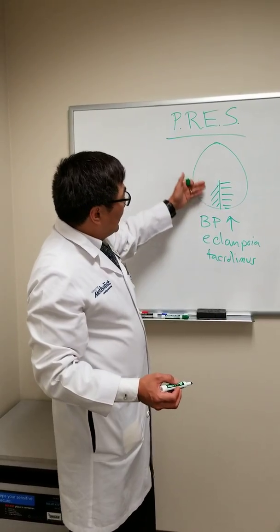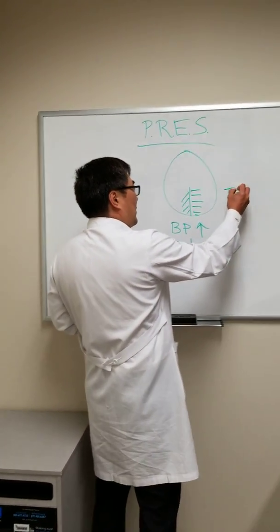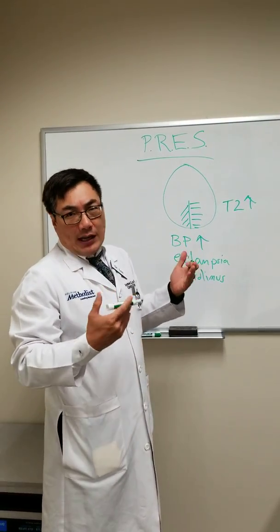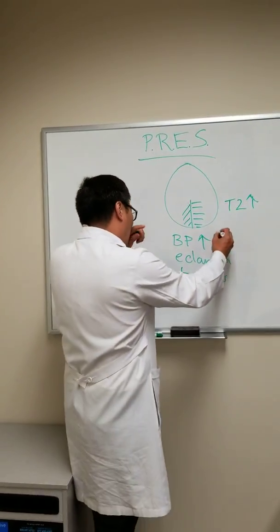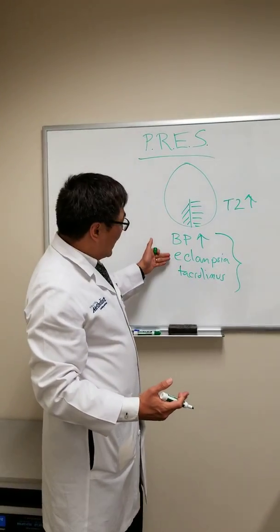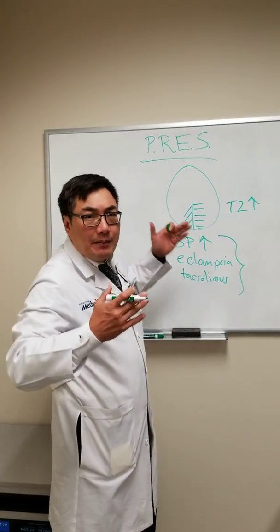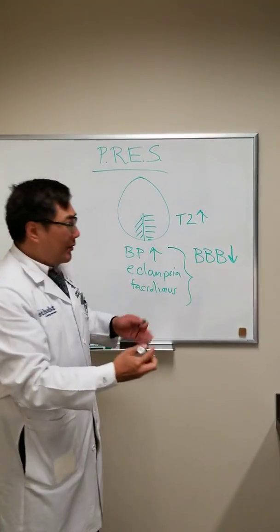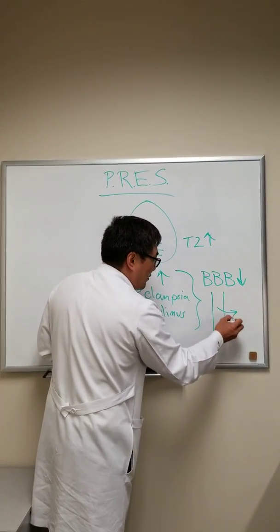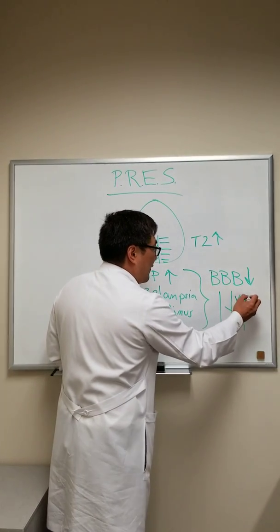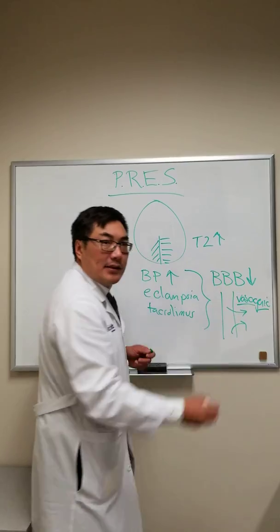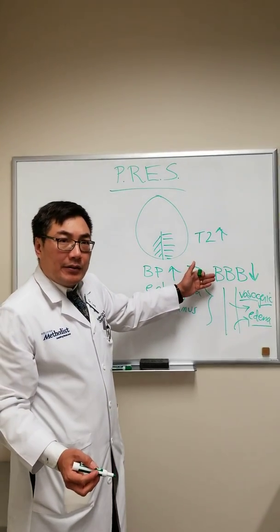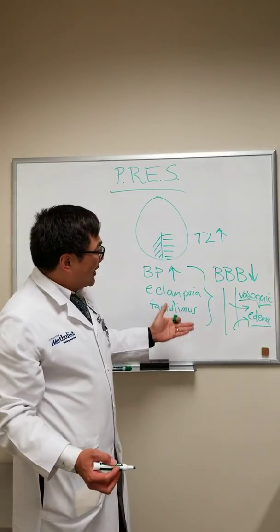It is reversible because the type of edema that we see on MRI scan — seen on T2 — is vasogenic edema in PRES rather than cytotoxic edema as in stroke. All of these mechanisms — hypertension, eclampsia, and immunosuppressive agents — share a common mechanism of breakdown of the blood-brain barrier. When you have breakdown of the blood-brain barrier, more water can come out of the blood vessel, and we call that vasogenic edema.